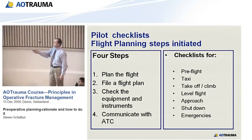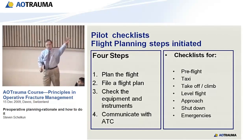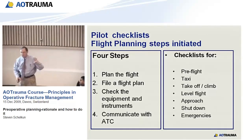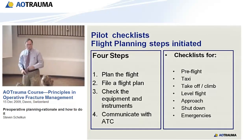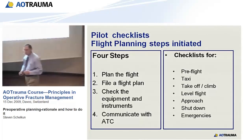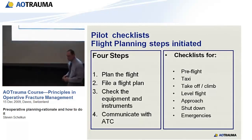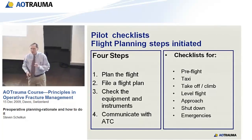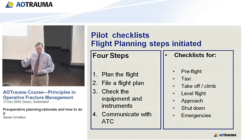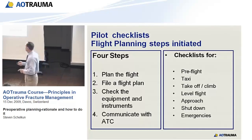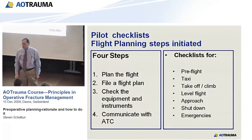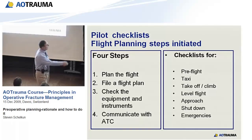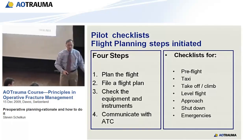The pre-flight planning consists of four steps. They plan the flight — how to get from point A to point B. They file a flight plan with the Federal Aviation Administration, done worldwide. They check the equipment and instruments in their plane, because once aloft you don't have a chance to find out if your wheels have adequate air. And they communicate with air traffic control all the way.